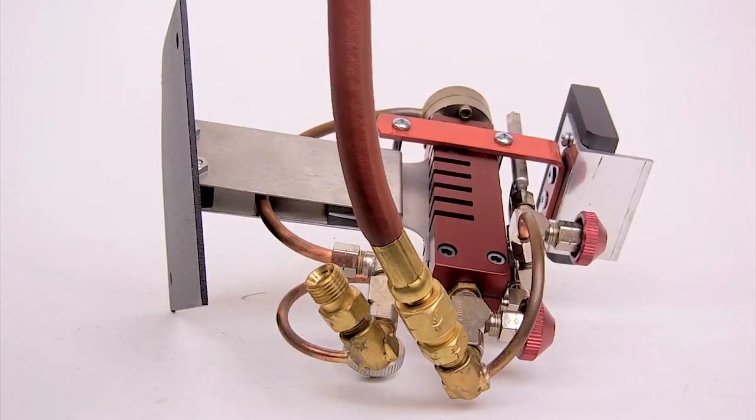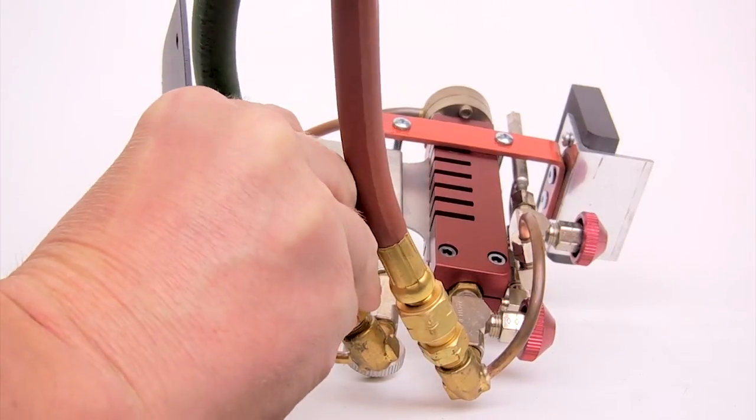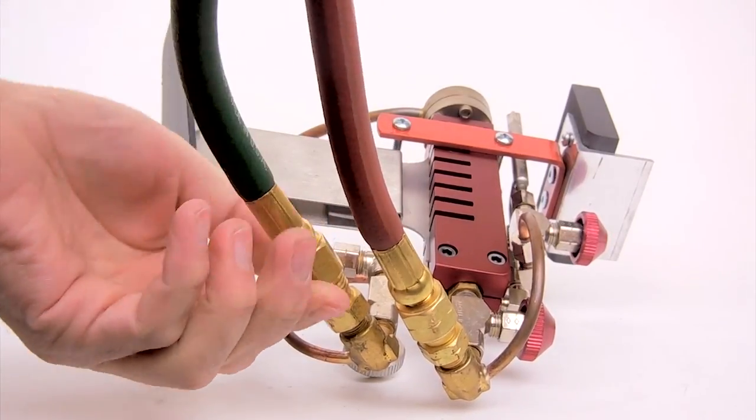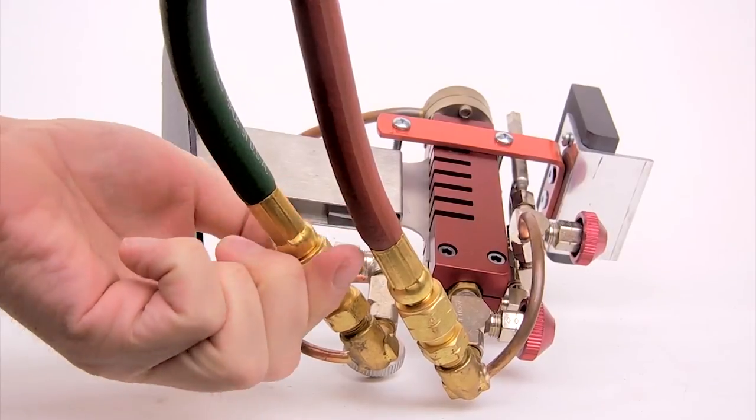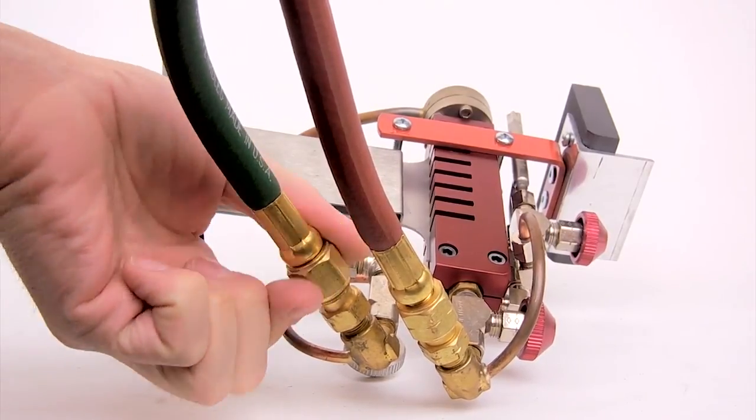Oxygen fittings do not have a notch and are a right-hand thread tightening in the clockwise direction. These fittings will only connect with other fittings without a notch.